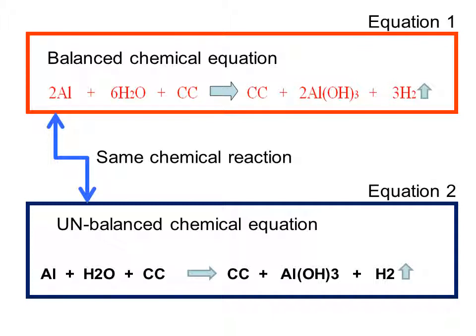The unbalanced chemical equation just says: add aluminum to water and catalytic carbon, and what you get is catalytic carbon unmodified, aluminum hydroxide, and hydrogen. The vertical arrow means that it goes off as a gas, so it bubbles up and you can harvest it.